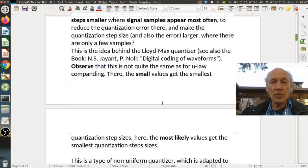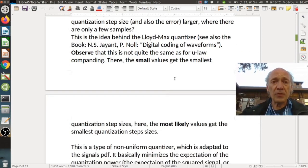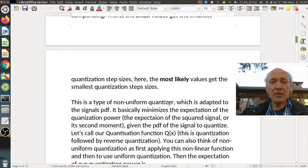And you can read more about it, for instance, in this book by Jayant and Noll about digital coding of waveforms. And observe that this is not quite the same as for the mu-law companding. There are small values get the smallest quantization step sizes. Here the most likely values get the smallest step sizes, which is not necessarily the same.